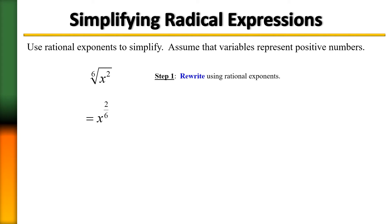And now all we have to do is just reduce that fraction. So cancel the common factor of 2 from the top and the bottom, and what that's going to leave you with is a fraction of 1/3. And so now we have x to the 1/3.